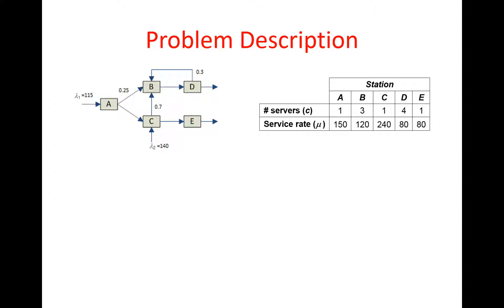I'd like to go back to the slide I skipped in the first video and talk about the queuing network we're going to solve. As you can see, we have five servers — servers A through E — and two sources of external arrivals into this network: λ1 and λ2, which are the two arrival rates. We also have probabilistic routings; for example, 25% of parts processed on A go to server B and 75% go to server C.